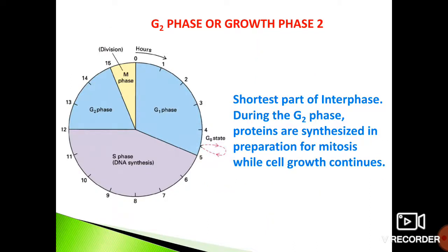After the S phase, the cell enters the G2 phase, or growth phase 2. It is the shortest part of interphase, and during this phase proteins are synthesized in preparation for the divisional phase — which can be mitosis or meiosis. It is called the M phase because both mitosis and meiosis begin with the letter M, but ideally it is the divisional phase. So to summarize: in G1, the requirements for synthesizing DNA and doubling organelles are prepared; in S phase, the actual duplication of DNA occurs; and in G2, all the required proteins are formed before the cell can enter the divisional phase.